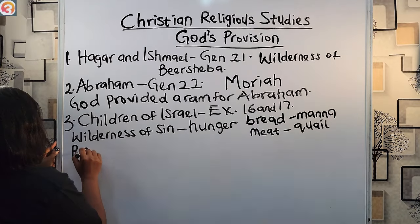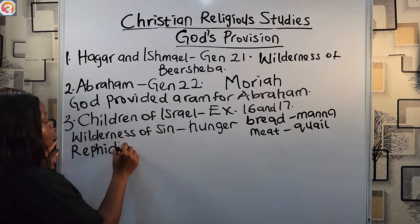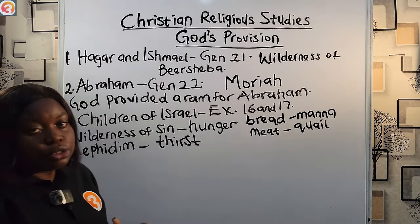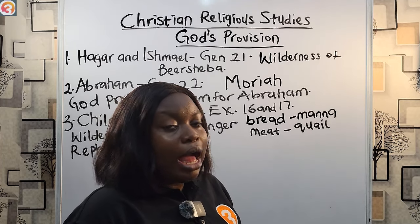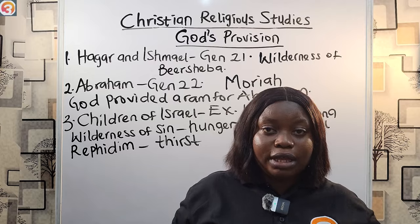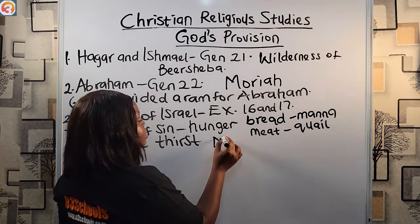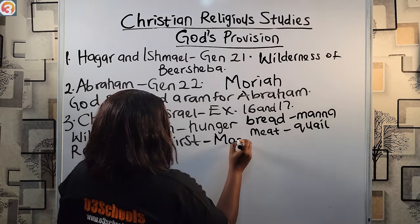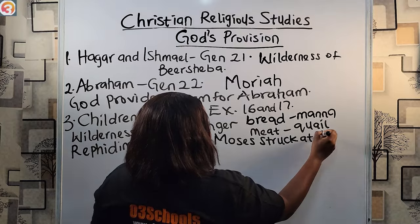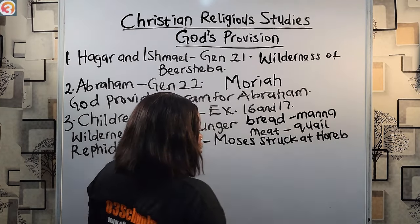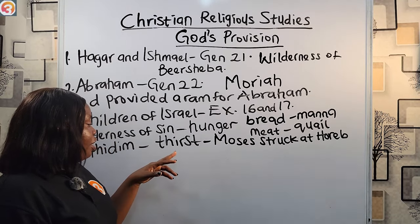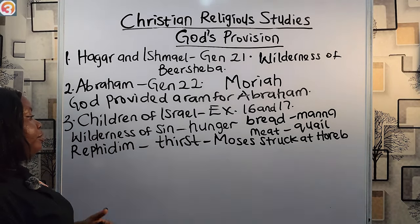When the Israelites came to Rephidim, there was no water to drink, so they complained of thirst to Moses. Moses also complained to God, and God told him to strike the rock at Horeb in the presence of the elders. Moses struck the rock at Horeb and water gushed out. So God provided water for the Israelites at Rephidim.